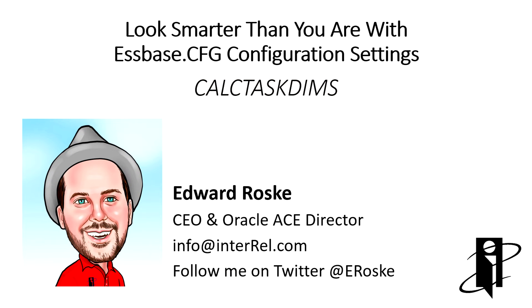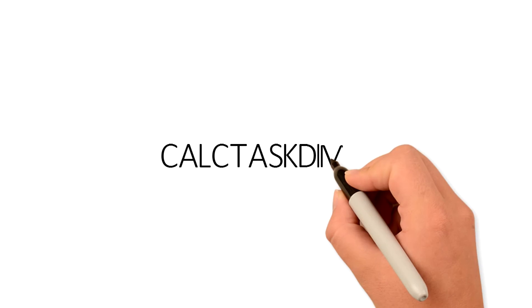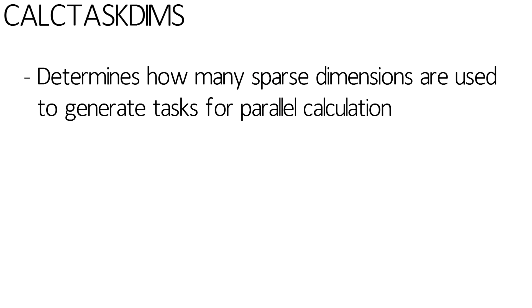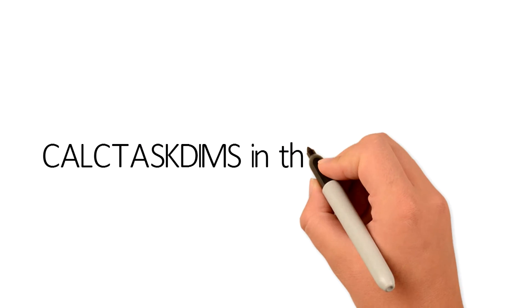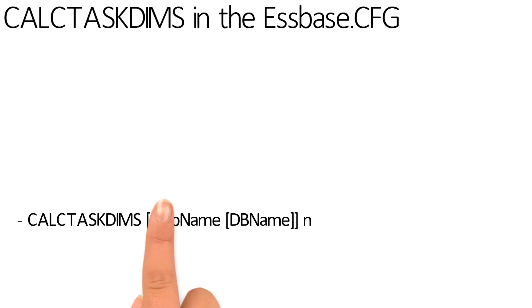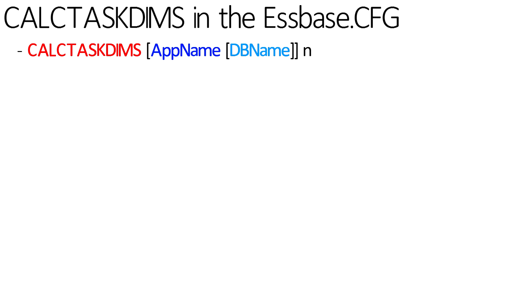The S-Space CFG setting CalcTaskDims controls how many sparse dimensions you're going to be able to generate tasks for during parallel calculation. To change CalcTaskDims from the default, go into your S-Space CFG and say CalcTaskDims space. If you don't specify an app name or a DB name, you can then just specify N — the number of task dimensions you want it to parallelize along.